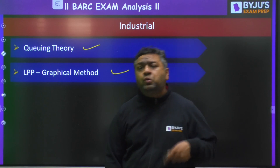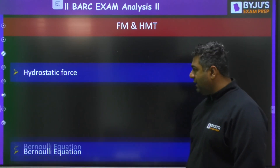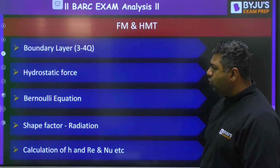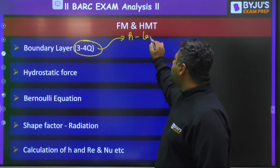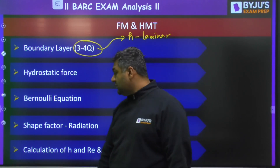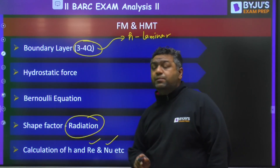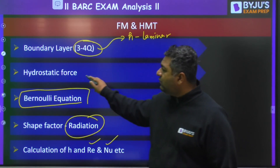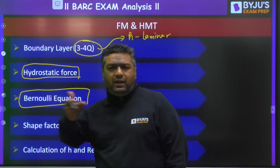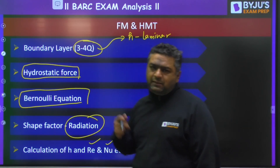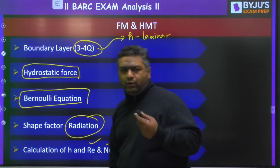Now the thermal part, where more questions were from Fluid Mechanics, Heat and Mass Transfer, and Basic Thermodynamics. FM and HMT are kept together since some questions were from the boundary layer. From boundary layer, 3 to 4 questions were there — one related to the H value of laminar flow (theoretical), and some questions on Reynolds number and Nusselt number. One question was from shape factor in radiation. Bernoulli equation and hydrostatic forces were also asked. One question gave multiple fluid types like seawater and asked pressure calculation using a given datum level. One boundary layer question was from thermal boundary layer; others were from the hydraulic/velocity boundary layer.